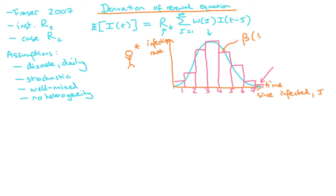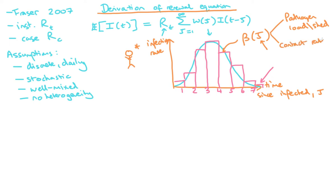We denote this discrete quantity beta(tau), where beta(tau) is the infection rate on a particular day tau since an individual was infected. The number of people infected per unit time depends on pathogen load within the individual, the rate at which the pathogen is shed, and the contact rate with susceptible individuals.